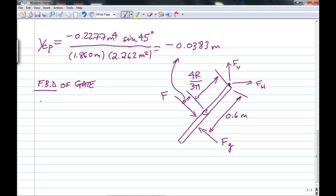So now we can take the sum of the moments about the hinge, where of course this is the hinge here. And so we have F, our hydrostatic force, which we know, times minus Y center of pressure, that 3.83 centimeters, plus 4r upon 3pi, that we already calculated, has got to balance, FG times 0.6.